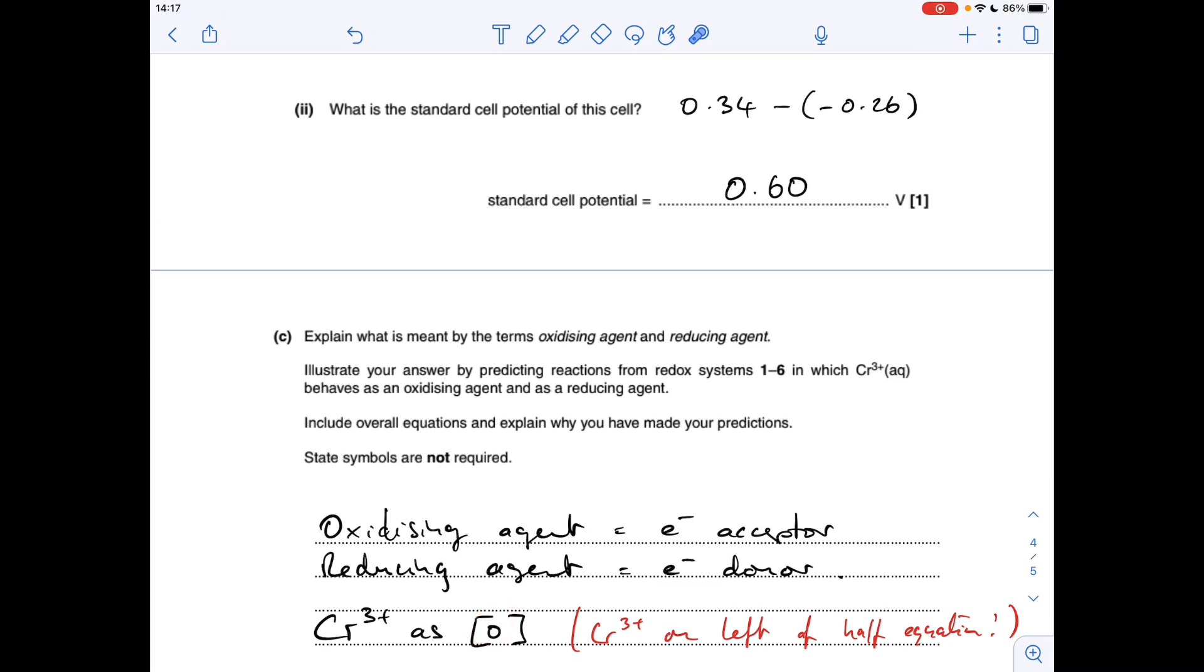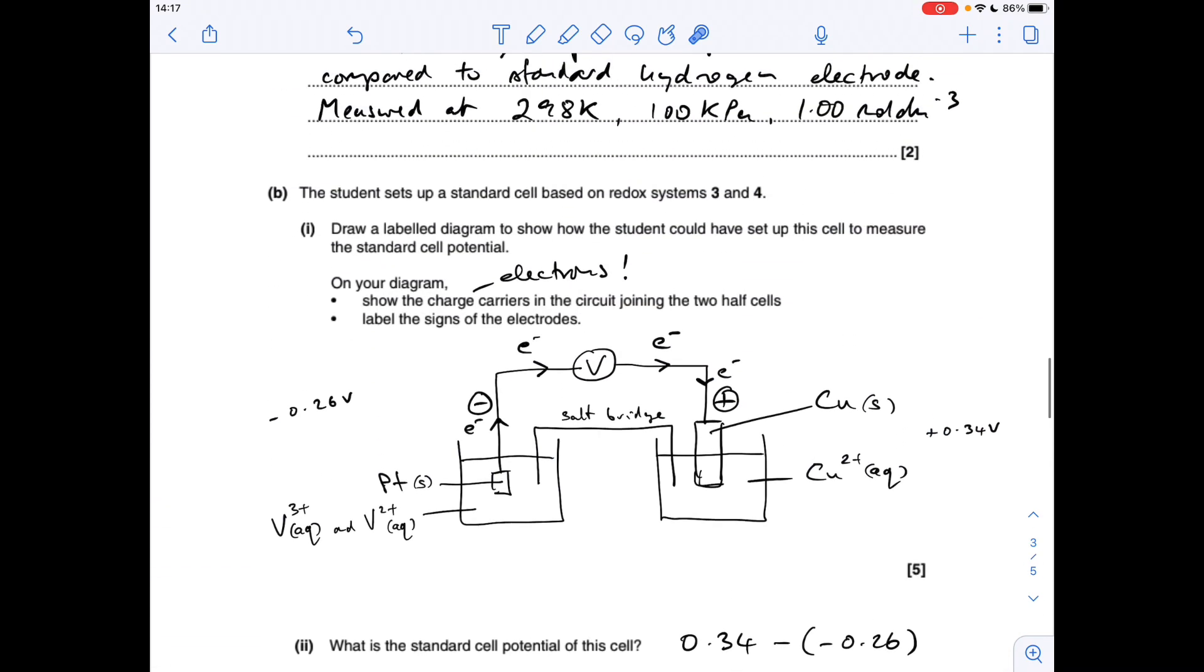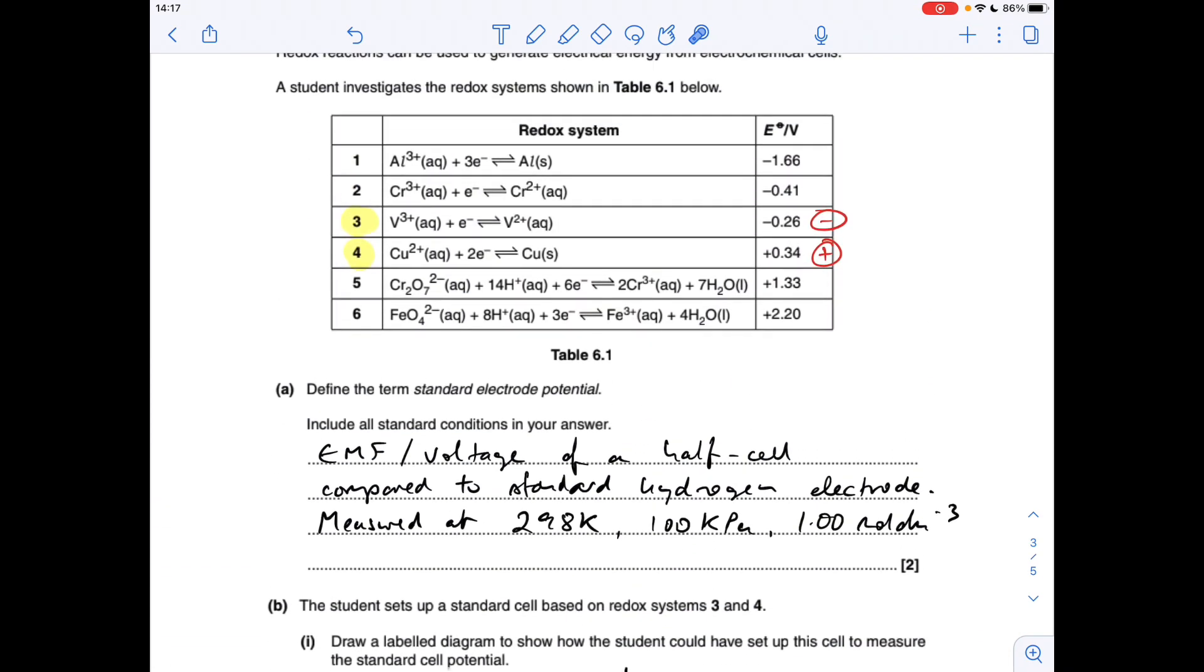Chromium 3+ acting as an oxidizing agent, because oxidizing agents are gaining or accepting electrons, they need to be on the left hand side of the half equation. So we're looking for this reaction going in the forwards direction, Cr3+ accepting electrons. We need something that is going to be less positive than -0.41 volts. The only system it can be is the aluminium 3+ aluminium one. So that's more positive than that. That means Cr3+ will take electrons from the aluminium, and the aluminium will be oxidised up to Al3+.